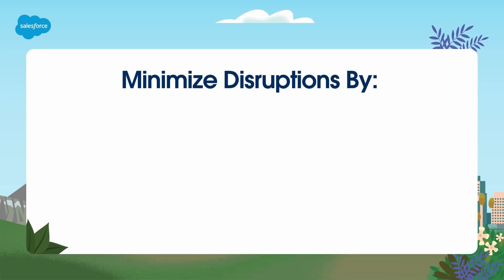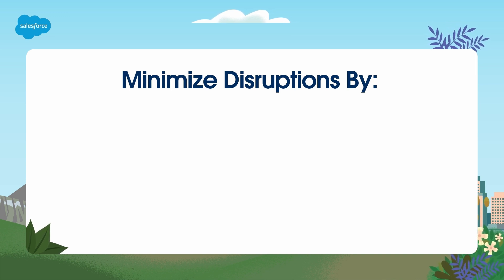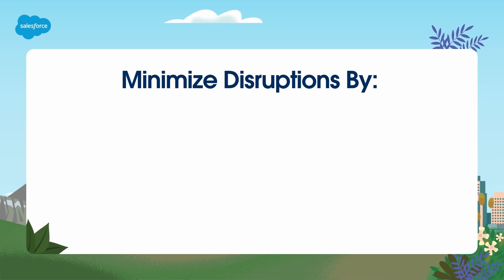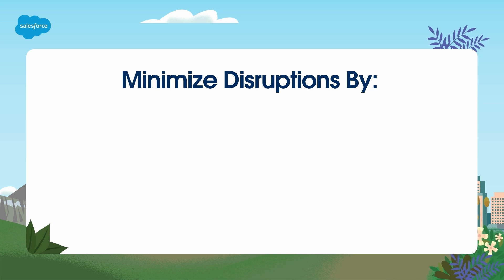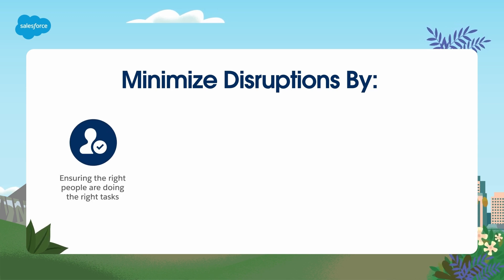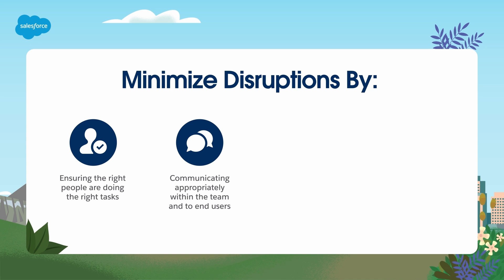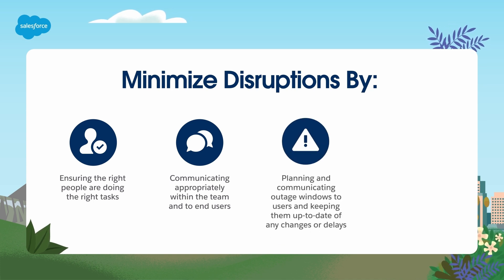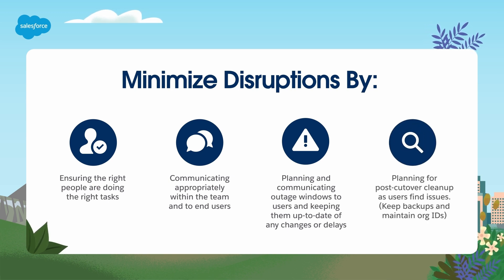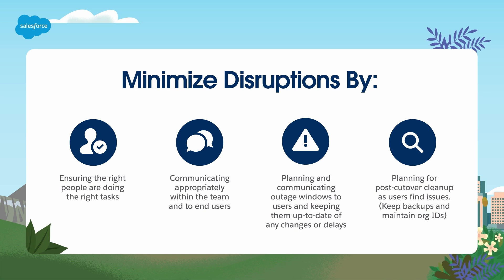When it comes to org migrations, let's acknowledge upfront that something may get overlooked and it may not be discovered until days later. Every member of your team will not be aware of every nuance in the configurations — after all, it took years to build. The risk of user disruption increases with the number of people making changes to the configuration and importing data, and the amount of customization in both orgs. You can minimize disruption by ensuring the right people with the necessary experience are doing the right tasks, communicating appropriately within the team as well as to the end users. Plan and communicate outage windows to users and keep them up to date regarding any changes or delays, and plan for post-cutover cleanup as users find issues. Remember to keep backups and maintain org IDs.